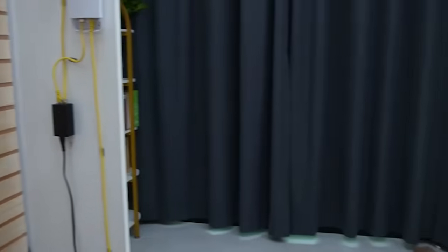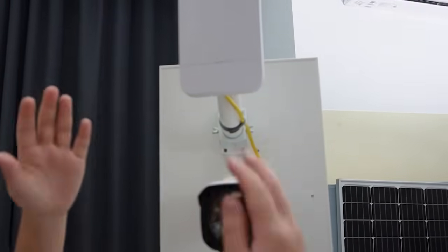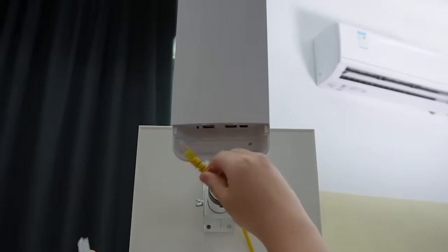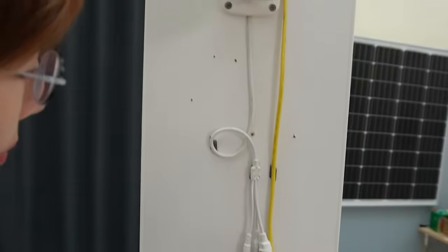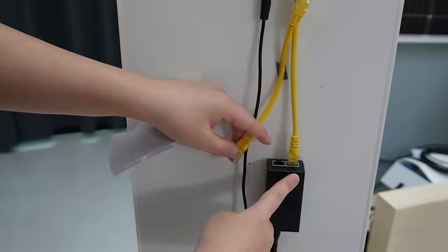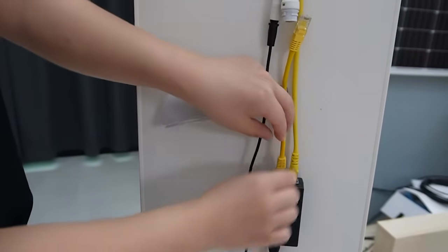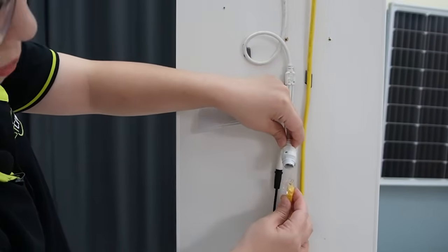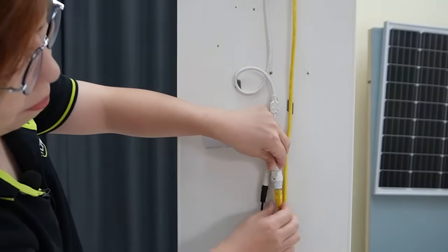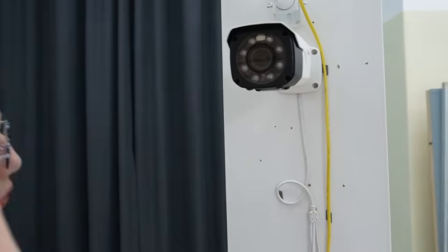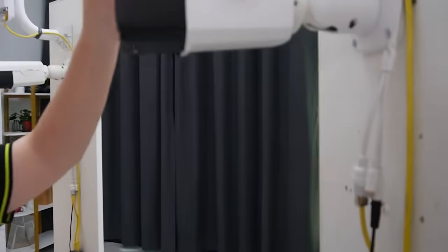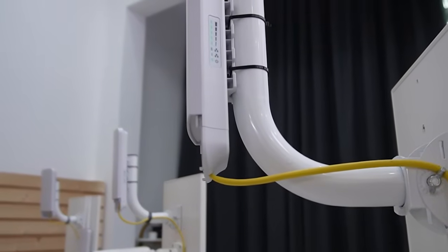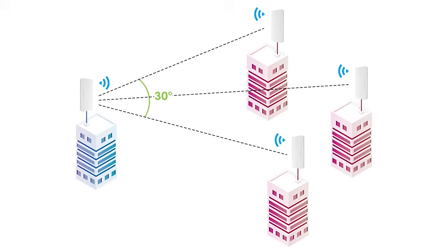Moving on to the second bridge — here we are installing a bullet camera. Power up the wireless bridge using PoE, plug into the PoE port of the injector, then use a short patch cord to connect the data port to the bullet camera. The bullet camera is now powered up, receiving both power and data through the wireless bridge and power supply. For the third bridge, the setup is the same — and for optimal performance, make sure all secondary bridges are facing within a 30-degree angle toward the main bridge.